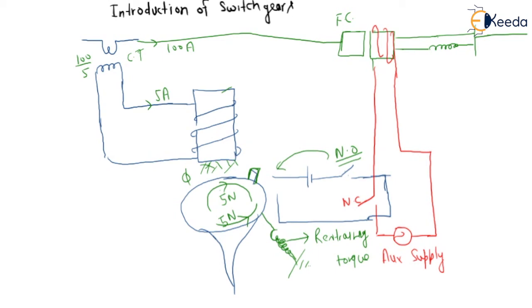This is using an attraction force so that this fixed contact and this moving pole will be fixed, this will be closed contact. But what happens when the fault occurs?